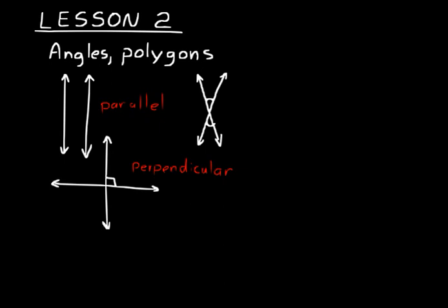So lines can be parallel to each other, they can be intersecting — just regular intersecting lines — or they can be perpendicular. Perpendicular lines are lines that intersect at right angles to each other.